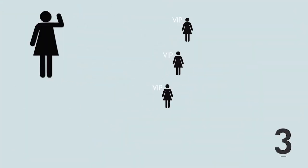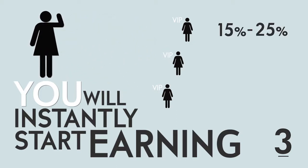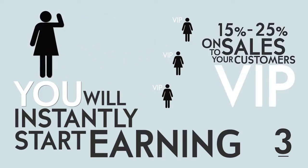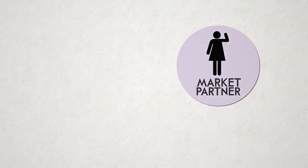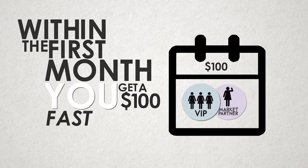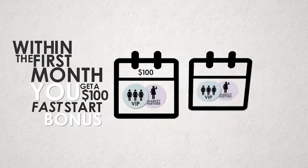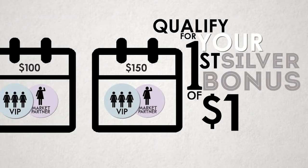3 and 1. You'll instantly start earning sales commissions of 15-25% on sales to your VIP customers, as well as commission on the sales of the other market partner you signed up. And if you do this all within the first month, you get a $100 fast start bonus. Do the same in your second month, and you will qualify for your first silver bonus of $150.